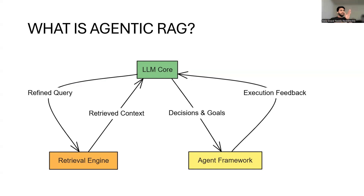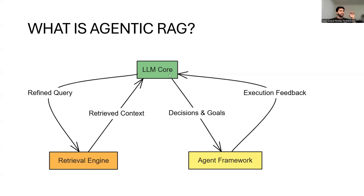The agent analyzes the initial query, refines it, and breaks it down into smaller tasks. Then the retrieval engine searches for relevant information like articles, code, or research papers to support the query, and gives the retrieved context to the LLM Core. The agent later determines the best approach to answer the query by setting specific goals and decisions. The system then provides execution feedback to the large language model by monitoring the performance and quality of the generated response.